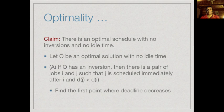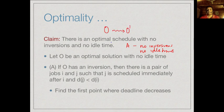If we can produce an optimum schedule O' with no inversions and no idle time, then since our schedule A also has no inversions and no idle time, they must produce the same lateness. We already know we can assume the optimum schedule has no idle time — idle time is useless, we can always shift things left and compress gaps. So we only need to worry about inversions.